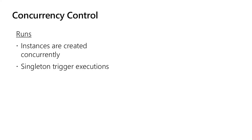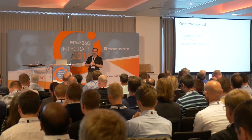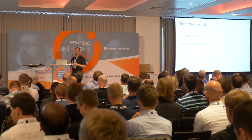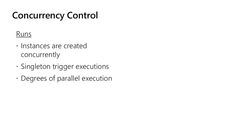Sometimes you don't want that to happen — either because you don't want to overwhelm a downstream system, or because you need in-order processing of workloads. You can use a singleton trigger execution by setting the level of parallelism to one. Or you can control the degree of parallelism in the trigger with the degrees-of-parallelism value.